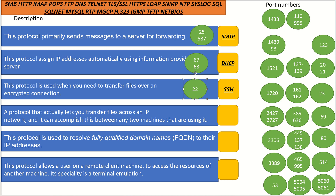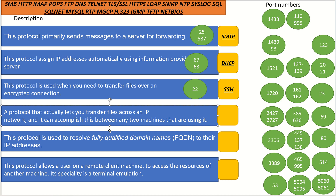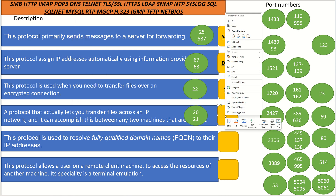A protocol that actually lets you transfer files across an IP network, and it can accomplish this between any two machines that are using it. This has something to do with transferring files, which is File Transfer Protocol. FTP resides on port numbers 20 and 21. Here it is in the orange box — FTP. So far, we're doing great.